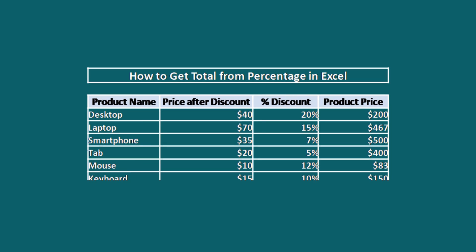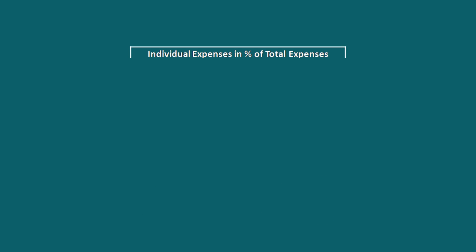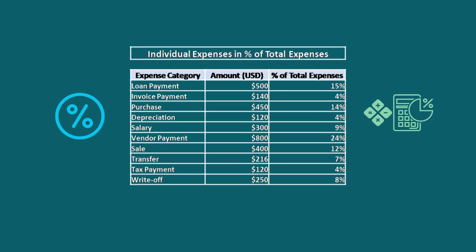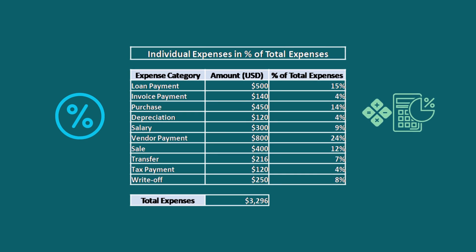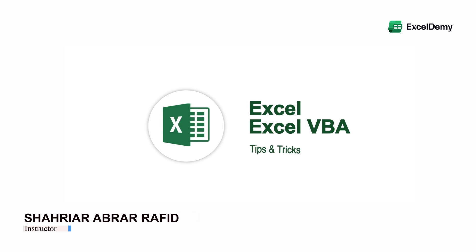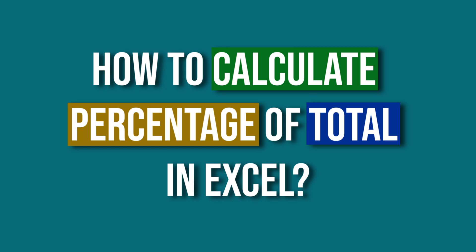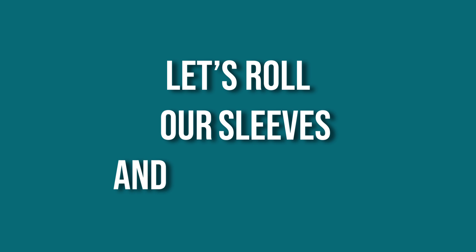Suppose you have a list of your daily or monthly transactions and you want to know in which transaction category you are spending the most, or vice versa. You can get this quickly by calculating the percentage of total of every transaction category in Excel. Welcome to Excel Demo, your go-to destination for mastering Excel and Excel VBA related challenges. I'm Shahri Arabra Rafid, and in today's video I'll be showing a detailed guide on how to calculate percentage of total in Excel. So let's roll up our sleeves and get started.